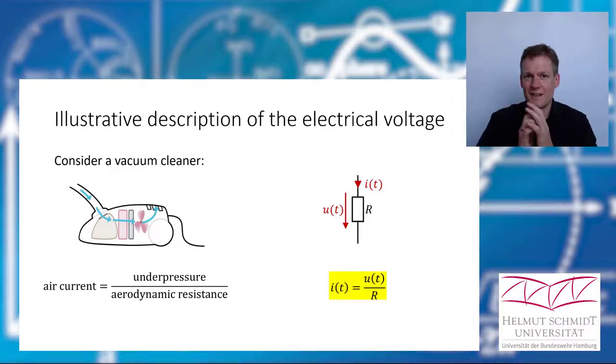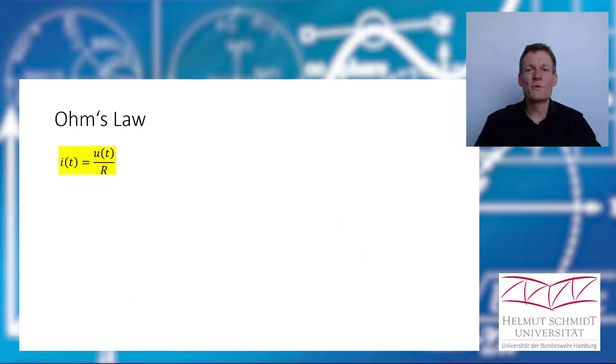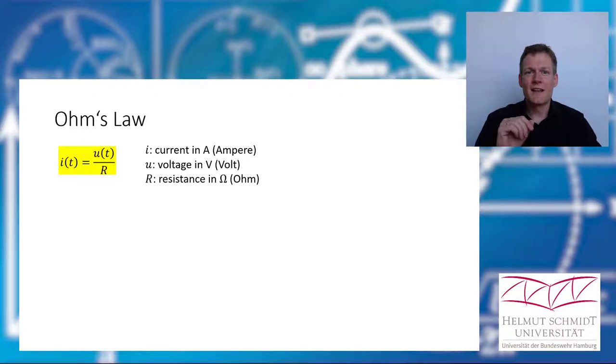The electrical current is the voltage drop divided by the resistance. You see, it's the same thing as the vacuum cleaner. The electrical current increases when the voltage increases or if the resistor value decreases. And this is our second important equation for today because this is Ohm's law. I is the current in Ampere, U is the voltage in Volt, and R is the resistance in Ohm.